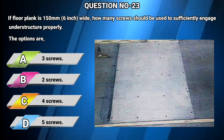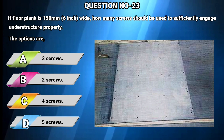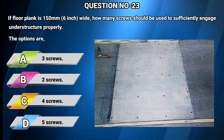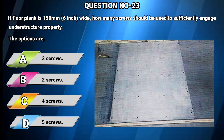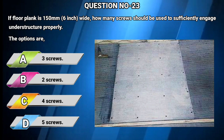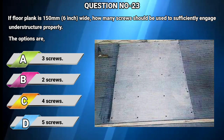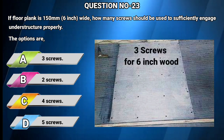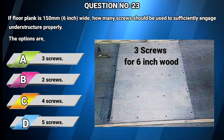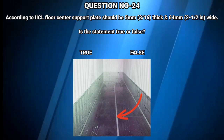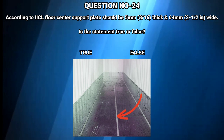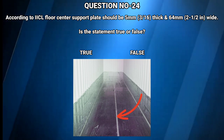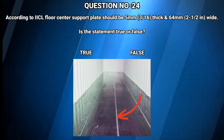Question number 23: If a floor plank is 150 mm (6 inches) wide, how many screws should be used to sufficiently engage the understructure properly? Options: A) 3 screws, B) 2 screws, C) 4 screws, D) 5 screws. The answer is A: 3 screws. Question number 24: According to IICL, the floor center support plate should be 5 mm thick and 64 mm wide. Is the statement true or false? The answer is true.